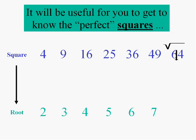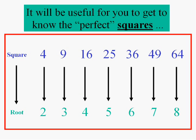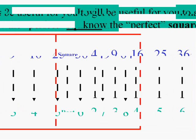We'll go to 64. The square root of 64 is 8. And we just did the square root of 81. So that's high enough. But it will behoove you to get to know those — what I call the perfect squares and their square roots.